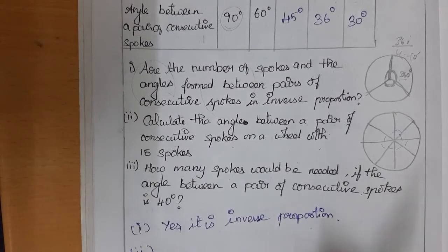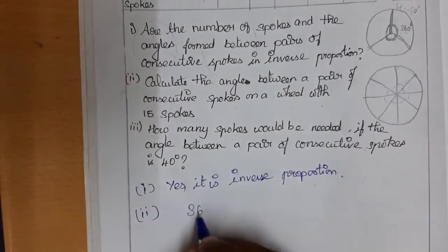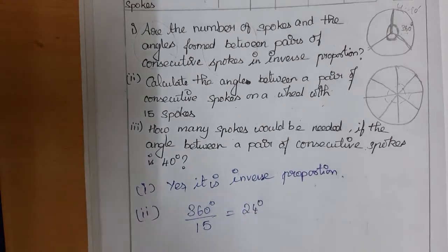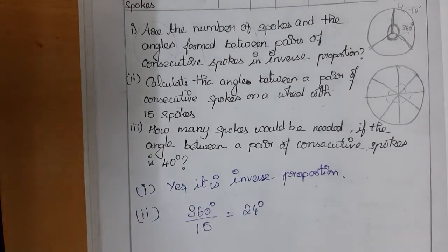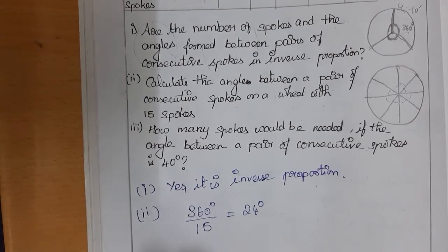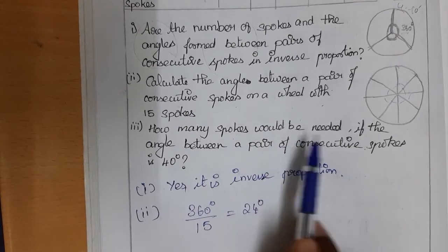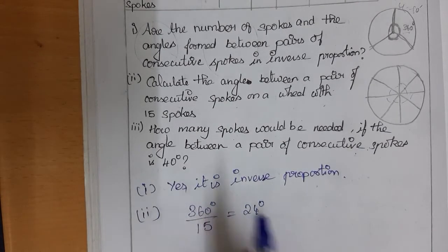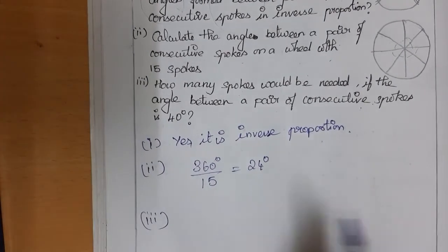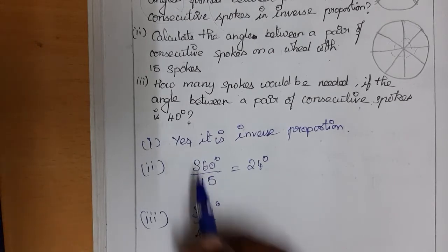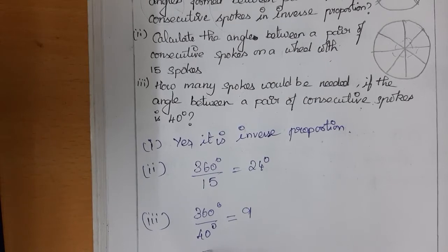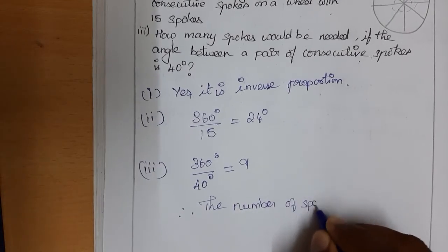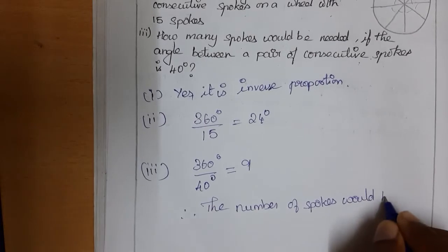Calculate the angle between a pair of consecutive spokes on a wheel with 15 spokes: 360 ÷ 15 = 24°. Next, how many spokes are needed if the angle between consecutive spokes is 40°? 360 ÷ 40 = 9. Therefore, 9 spokes would be needed.